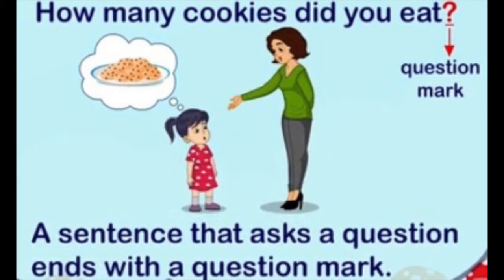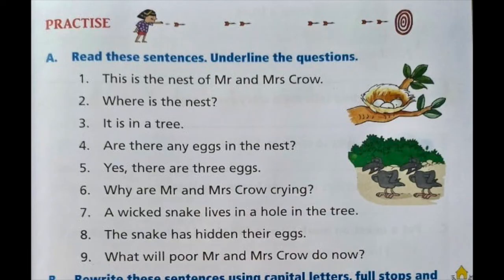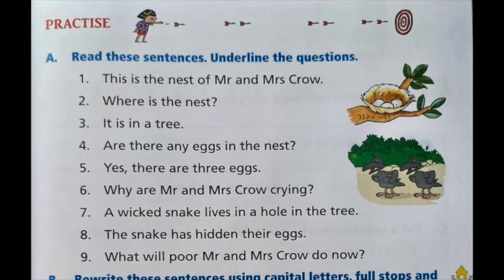Now let's move on to page number 9. Let's read the first question: 'Read these sentences. Underline the questions.' We have to read all these sentences and wherever the sentence is a question, we have to underline it. Let's read the first one: 'This is the nest of Mr. and Mrs. Crow.' Full stop. Is it a question? No, so we will not underline it. Number two: 'Where is the nest?' — ending with a question mark. So we will underline number two.